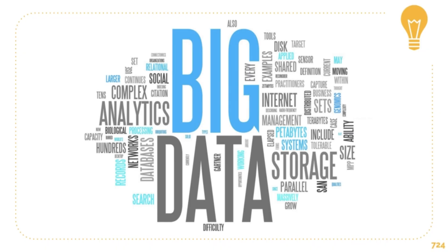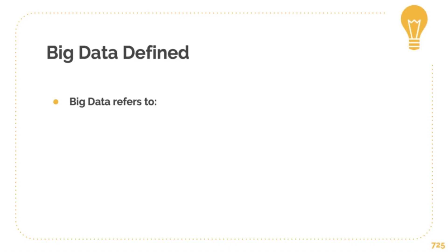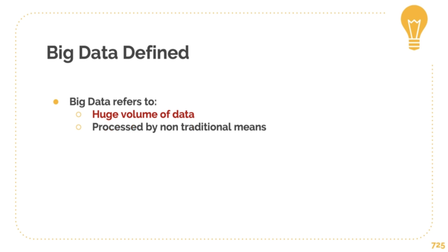So this is a cool little analytics word map showing all of the associated words with big data. But let's get to it. How big is big? Well, let's define big data first. Big data refers to huge volumes of data that cannot be stored or processed on traditional computers. So it's a huge volume of data processed by non-traditional means.